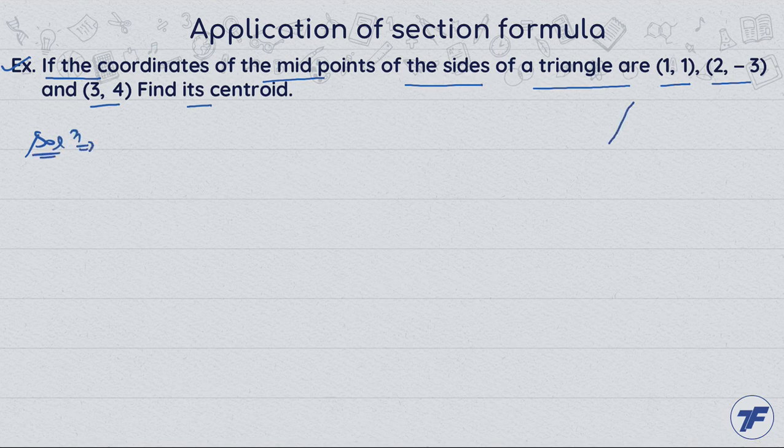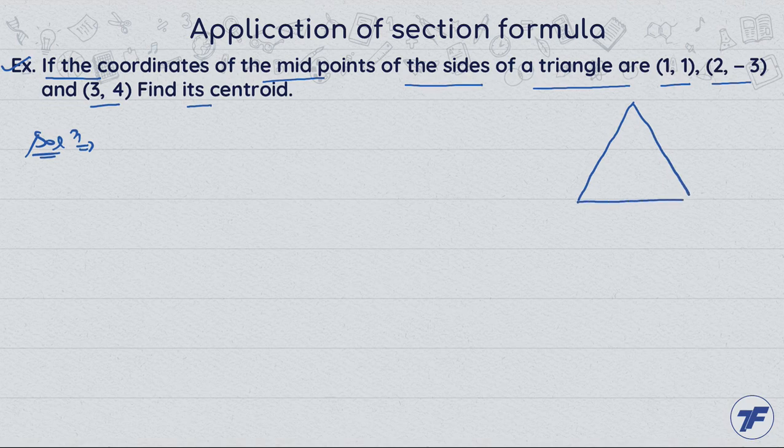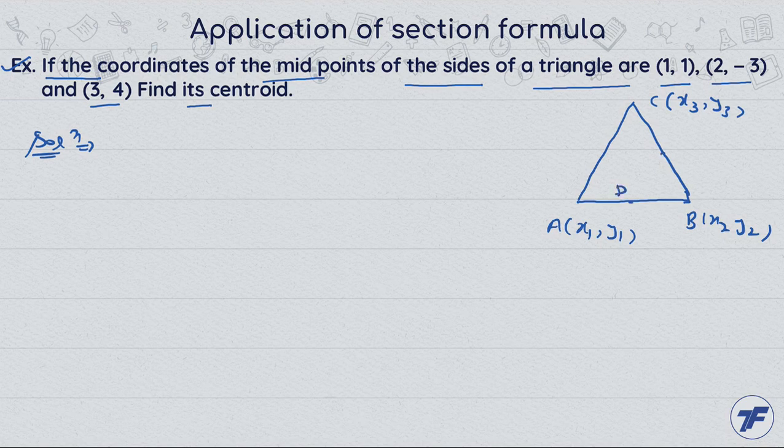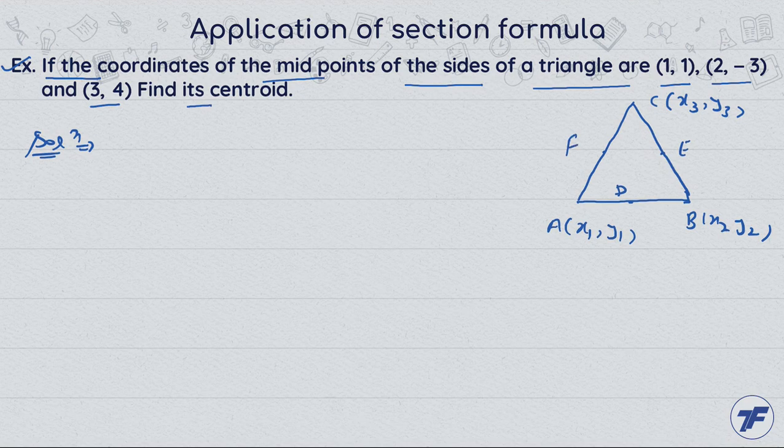We have a triangle of vertices A, B, C. The coordinate of A is (x1, y1), coordinate of B is (x2, y2), and coordinate of C is (x3, y3). D, E, F are the midpoints of sides AB, BC, and AC.